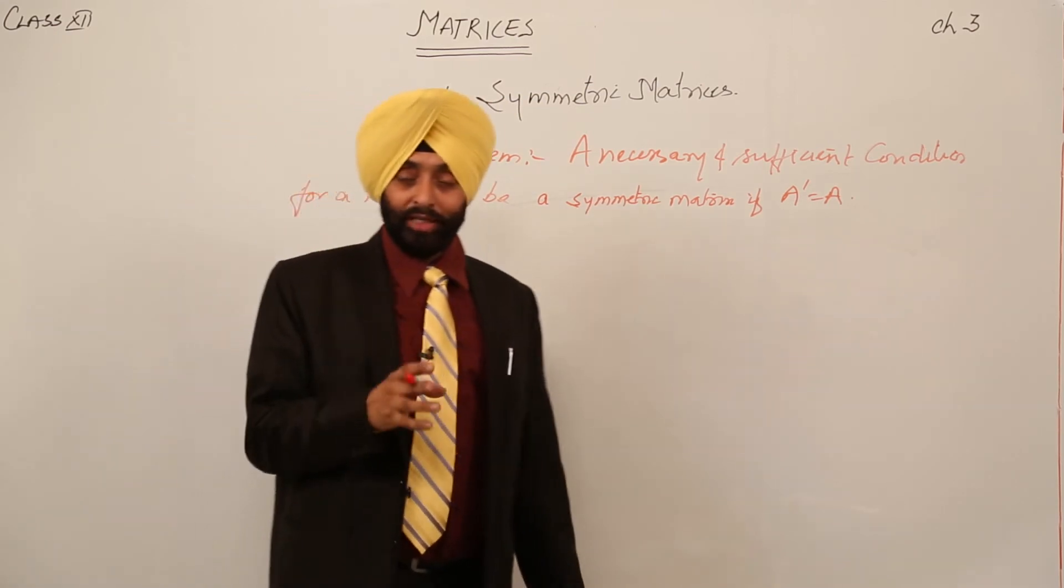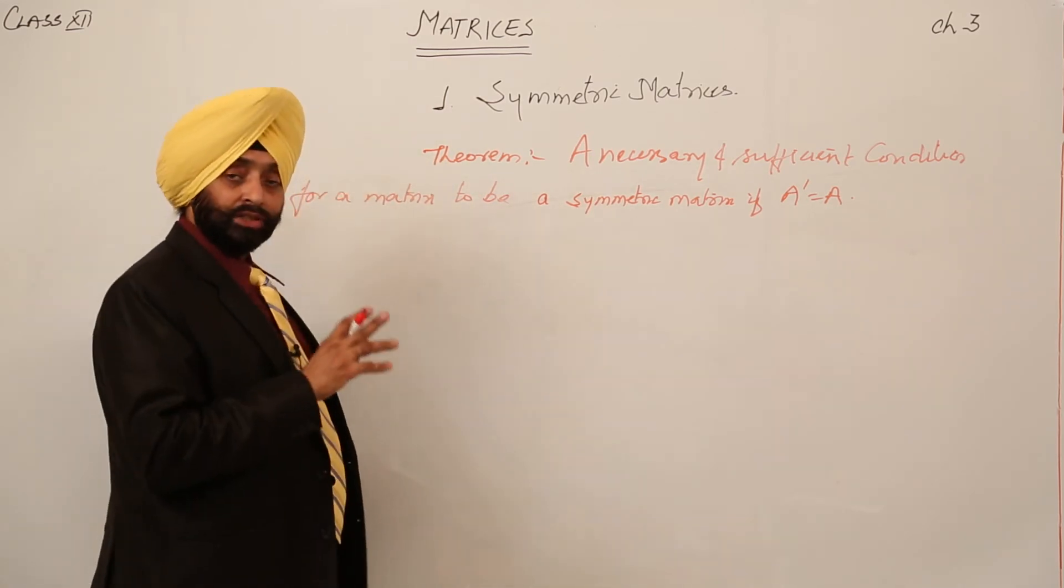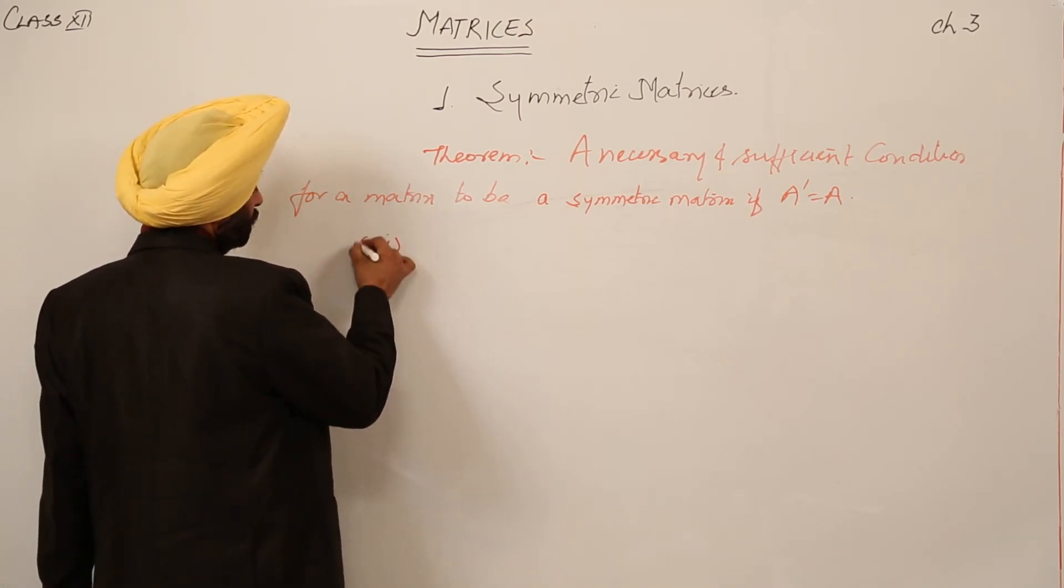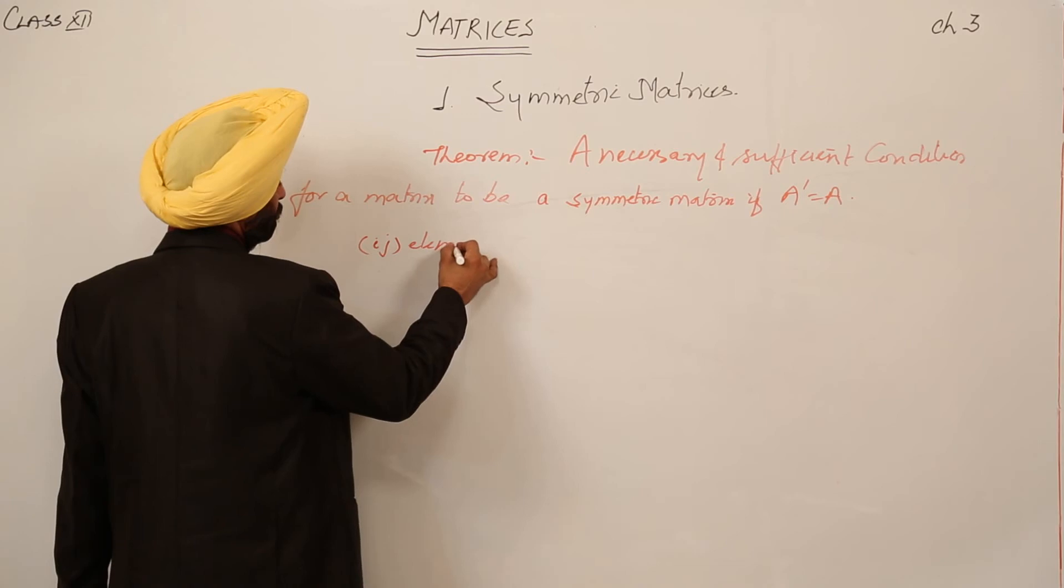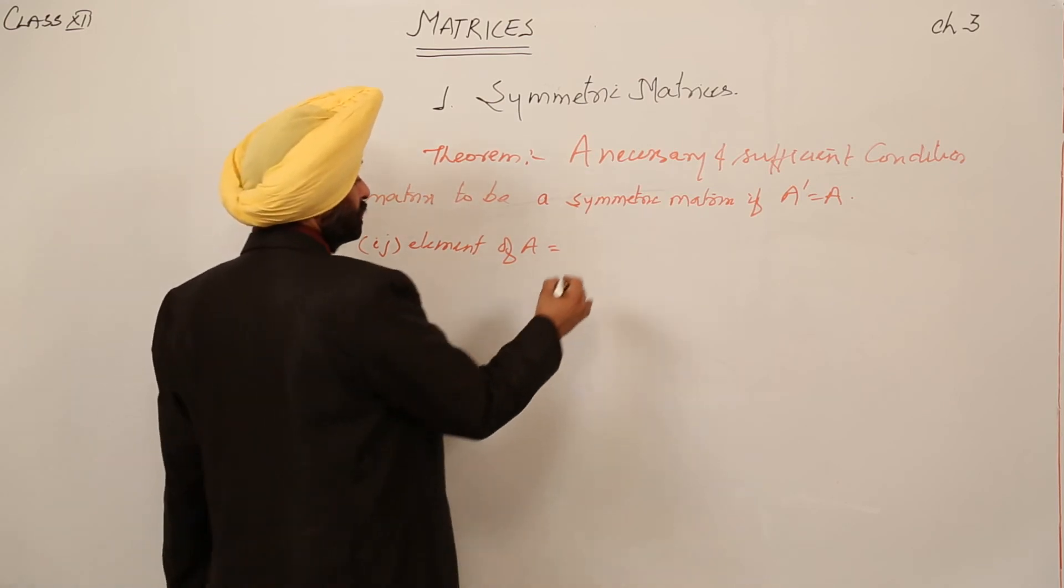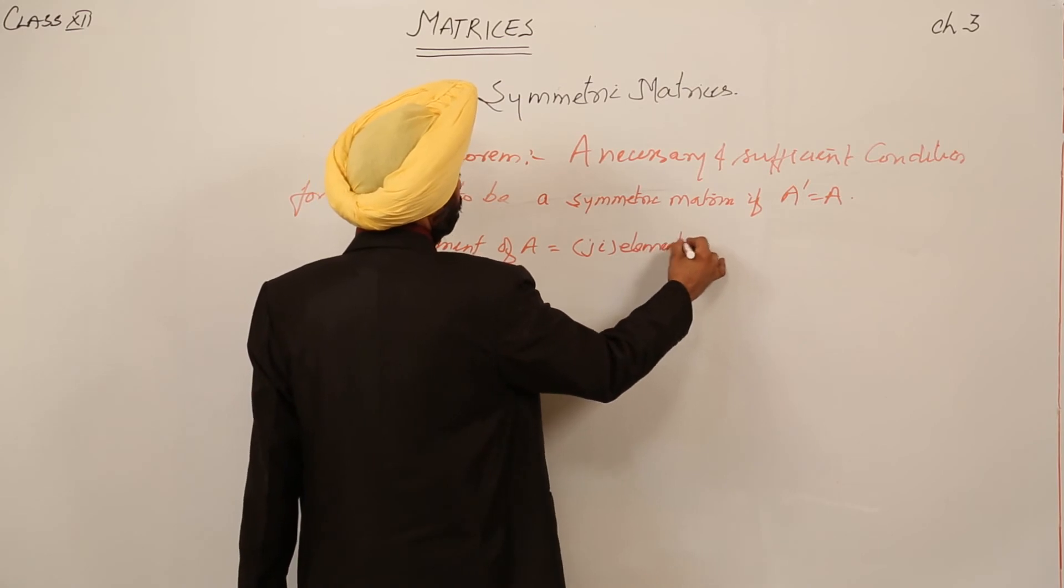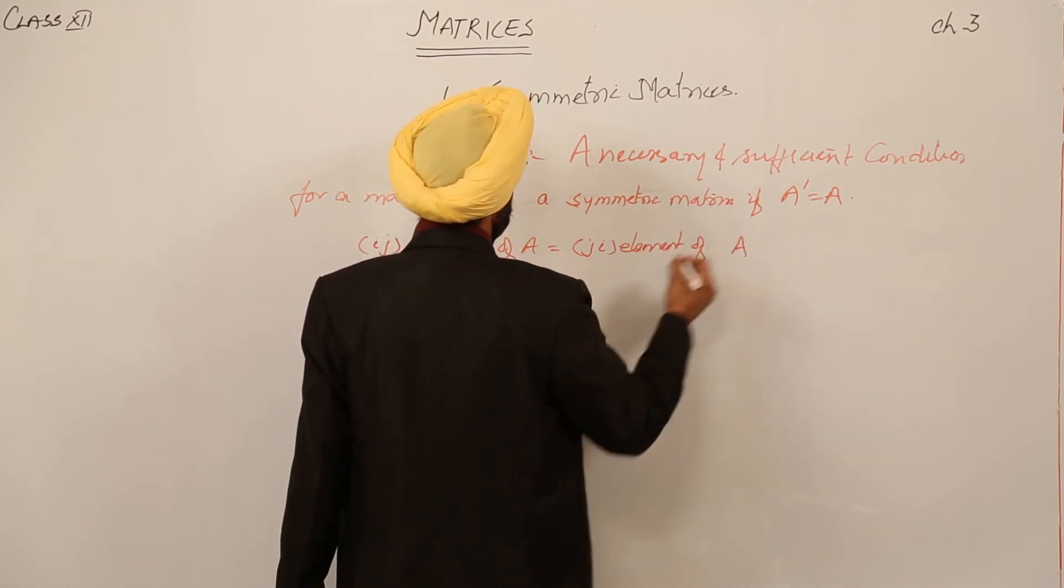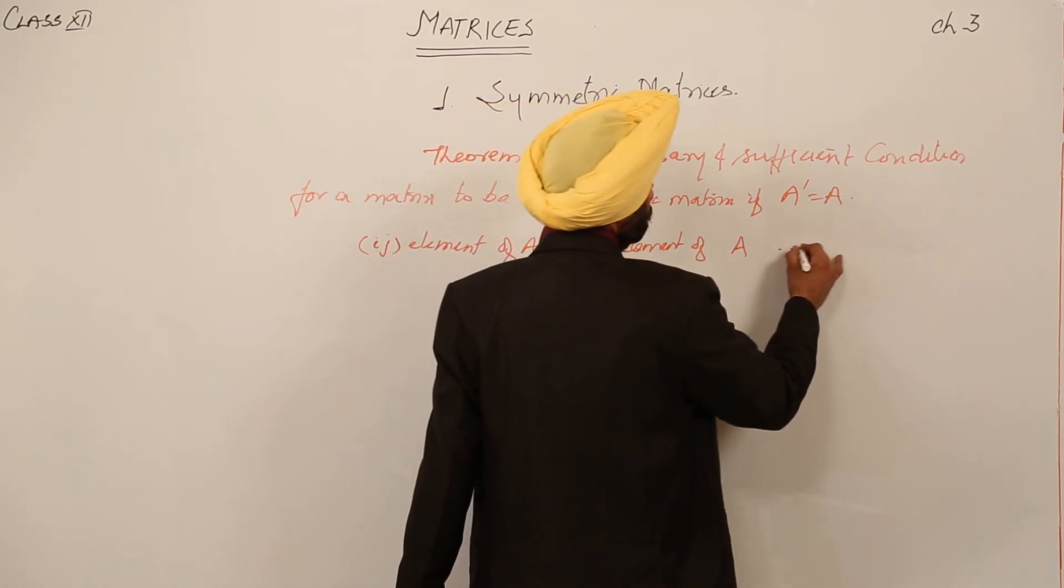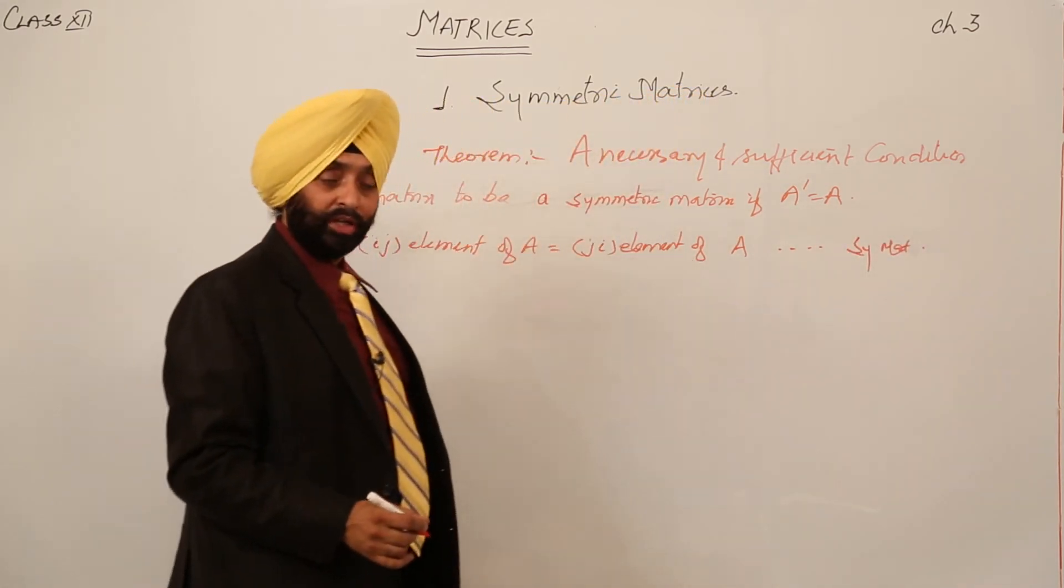The condition is if A transpose is equal to A, then also it is called symmetric matrix. We can do with an example also with theoretical part also. Ijth element of A is equal to jith element of A. What is this? Symmetric matrix.